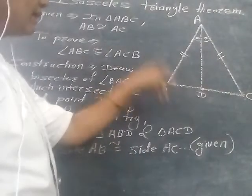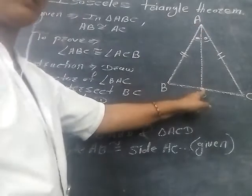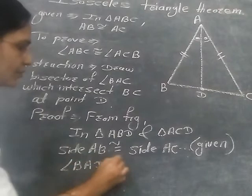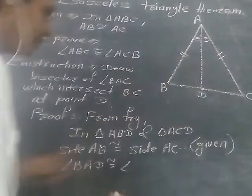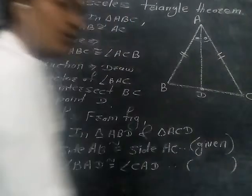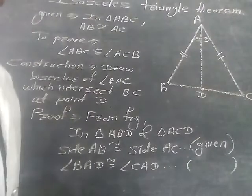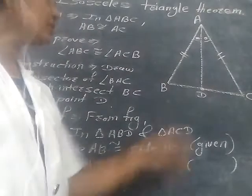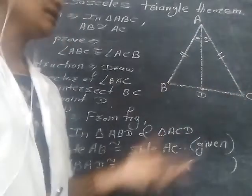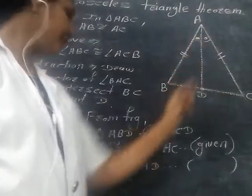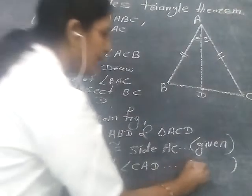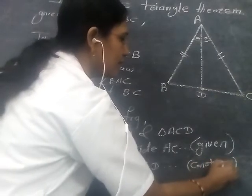Second, angle BAD is congruent to angle CAD. Why? Because we constructed AD as the bisector of angle BAC. A bisector divides the angle into two equal parts. So we write here: angle BAD is congruent to angle CAD, and the reason is: by construction.